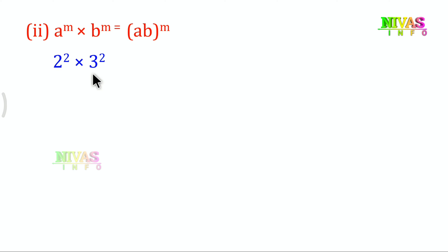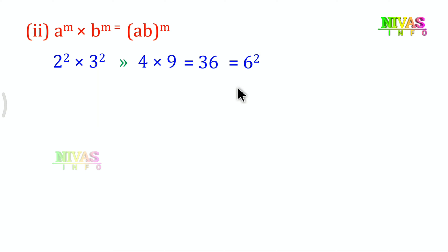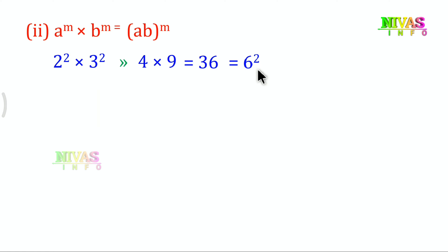Example: 2 power of 2 into 3 power of 2. The value of 2^2 is 4, and the value of 3^2 is 9. Then 4 into 9 is 36. And 36 equals 6^2, since 6 into 6 is 36. Here the bases are different, so we multiply the bases together and keep the common exponent.